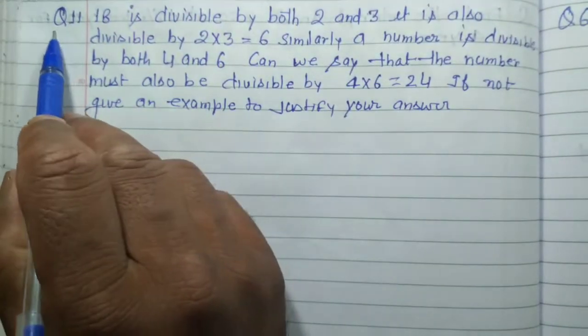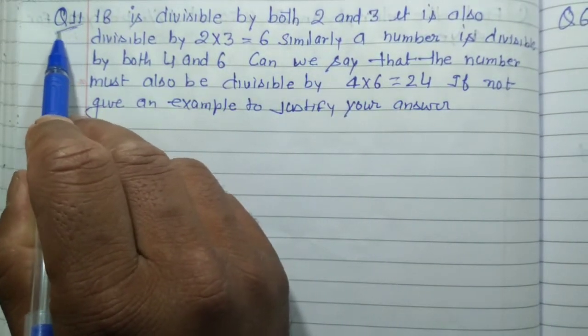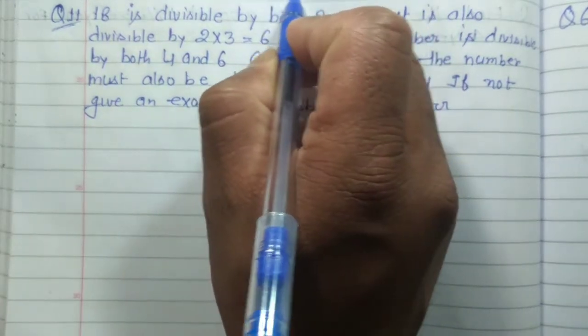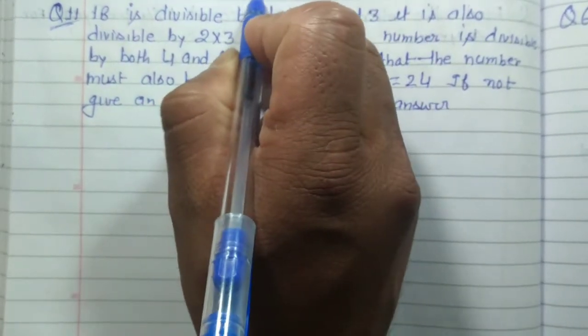So, now my question is Exercise 11. Question number 11 is Exercise 3.5. Where is Exercise 3.5?